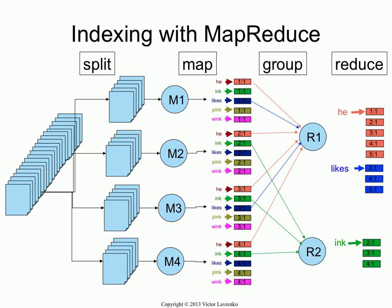A student asks: with Zipf's law, there are a couple of words that are very frequent — wouldn't this slow things down because they're all sent to the same reducer? Yes, the question is that from Zipf's law, some words would be very frequent and would be sent to the same location. It is actually a problem, and there are tricks for getting around that.